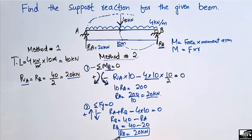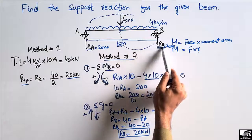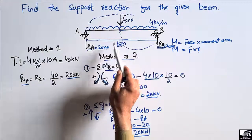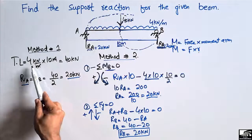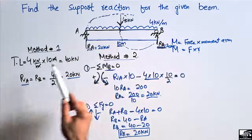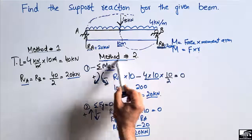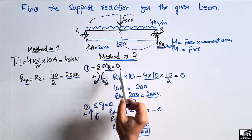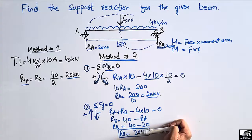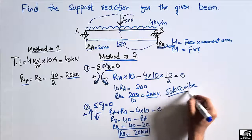So RB = 20 kilonewton, confirming that both supports provide the same magnitude of reaction. In Method 1, you simply multiply the load by the length and divide by 2. In Method 2, you take the summation of moments at a point equal to zero and then apply the vertical equilibrium equation. Hope you guys understand — don't forget to subscribe to the channel for daily civil engineering videos. Thank you for watching.